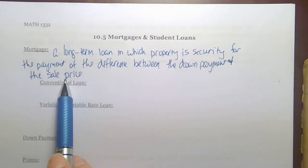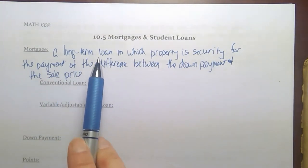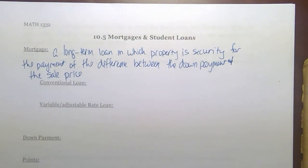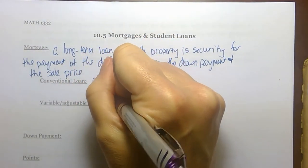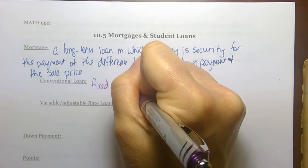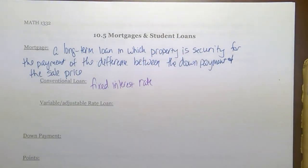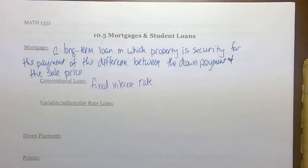That down payment amount is subtracted from the sale price, and the result is the amount being loaned. There are two basic types of mortgages: a conventional loan and a variable or adjustable rate loan. We're going to focus on conventional loans. A conventional loan has a fixed interest rate, which means your principal and interest payment will not change over the life of the loan. For a 30-year mortgage, you expect the same principal and interest payment from the first year through the 30th year until the loan is paid off.